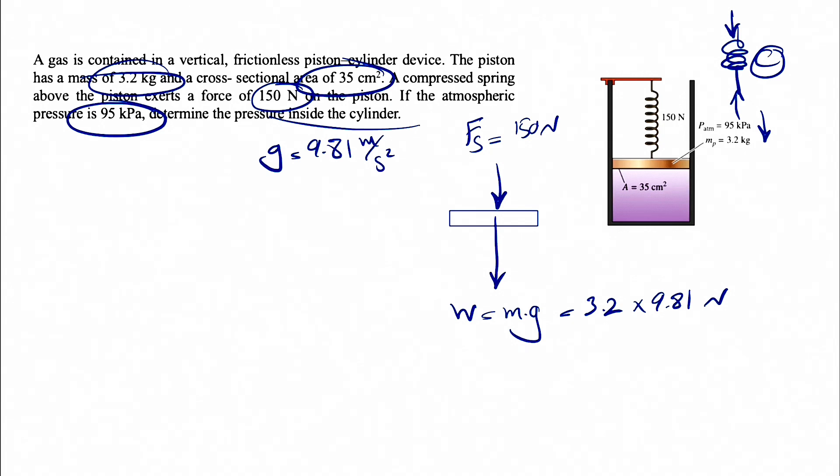On top of this piston we have the atmospheric pressure which is 95 kilopascal. So the pressure on the atmosphere will be something like this on top. But again, that's the pressure unit. What we care about is force.